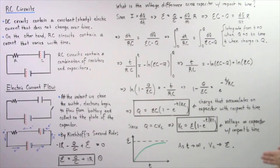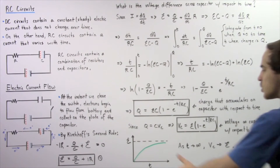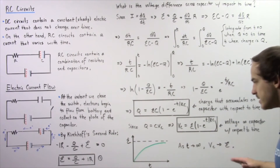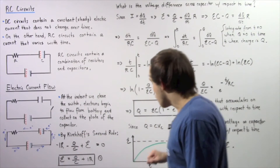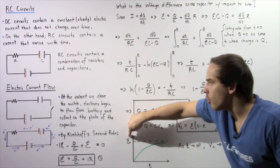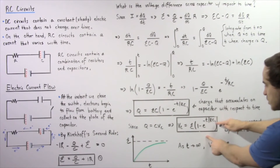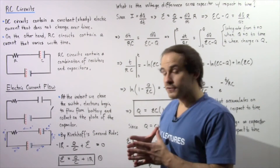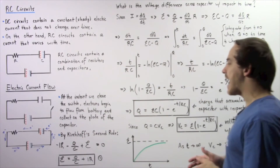This equation gives us the voltage difference across our capacitor with respect to time within an RC circuit. Plotting this on the xy-axis, the y-axis is the voltage on the capacitor and the x-axis is time. As time increases, the voltage across the capacitor approaches the voltage of the battery — the maximum possible value. As time approaches infinity, the exponential term approaches zero and V_C approaches the EMF.